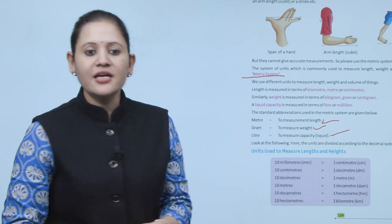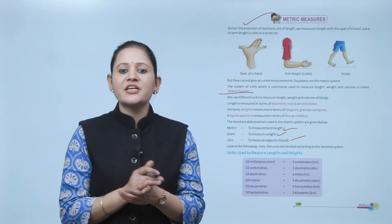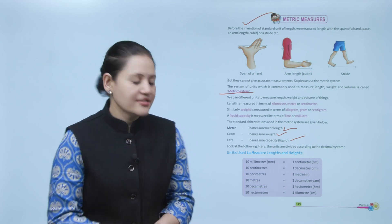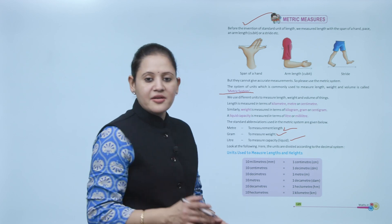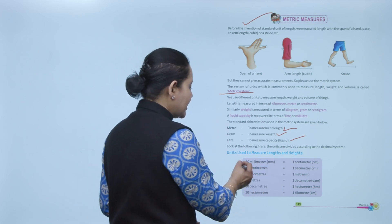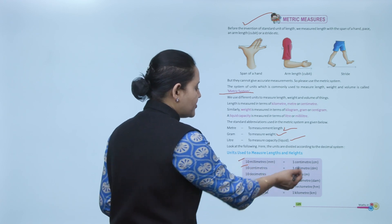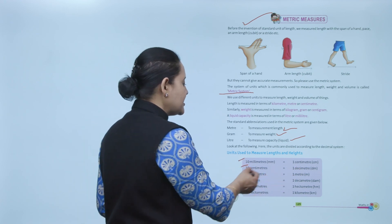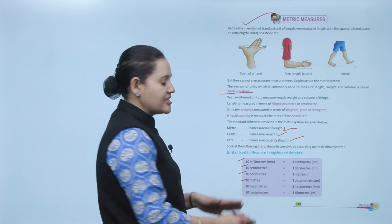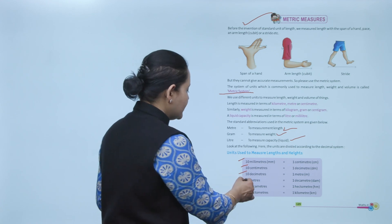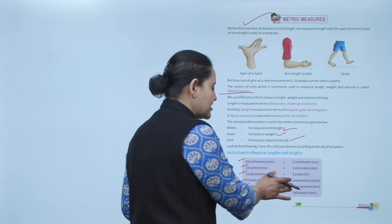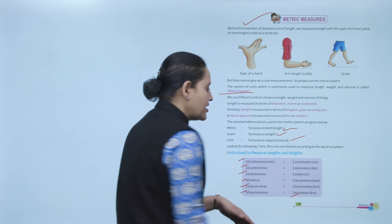The units are divided according to the decimal system. Units used to measure length and height: 10 millimeters equals 1 centimeter, 10 centimeters equals 1 decimeter, 10 decimeters equals 1 meter, 10 meters equals 1 decameter, 10 decameters equals 1 hectometer, and 10 hectometers equals 1 kilometer.